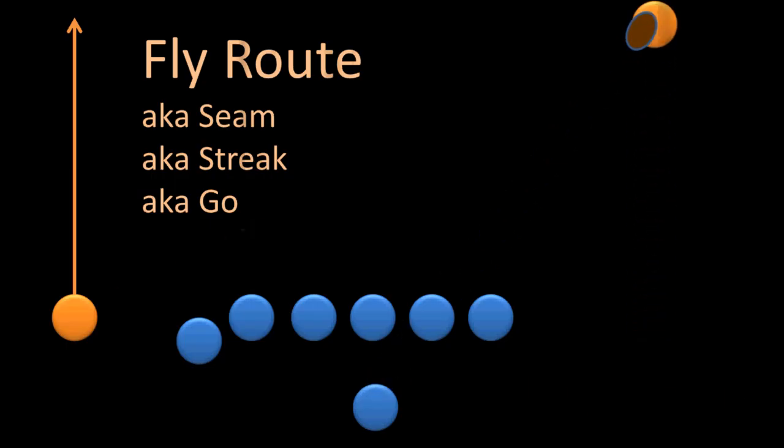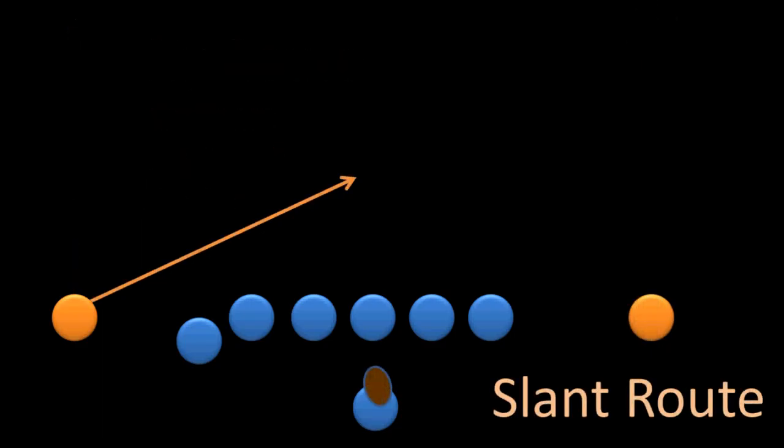Similar to the fly route is the slant, which means that rather than running parallel with the sidelines, the receiver is running at an angle across the field.